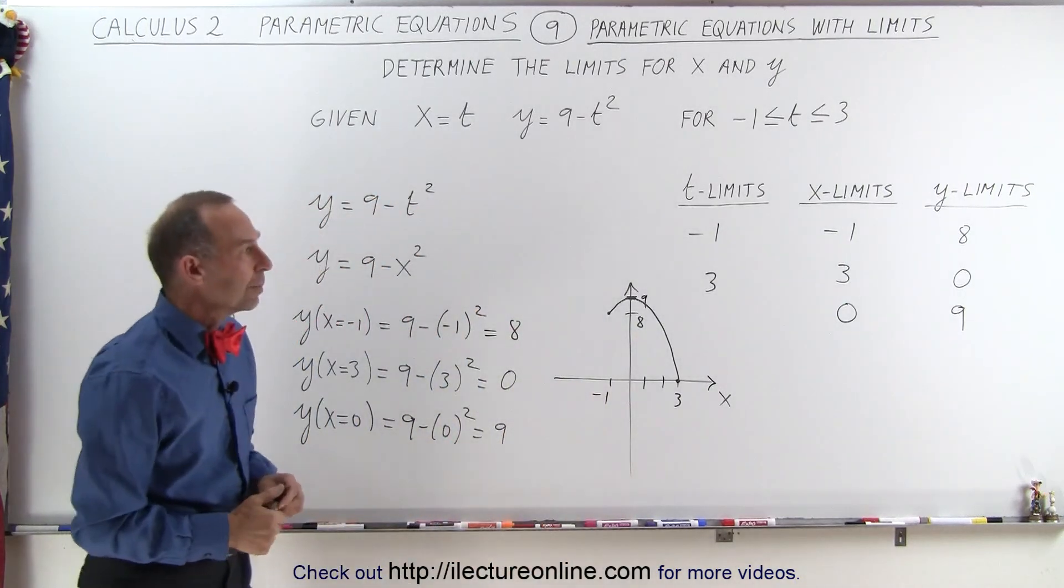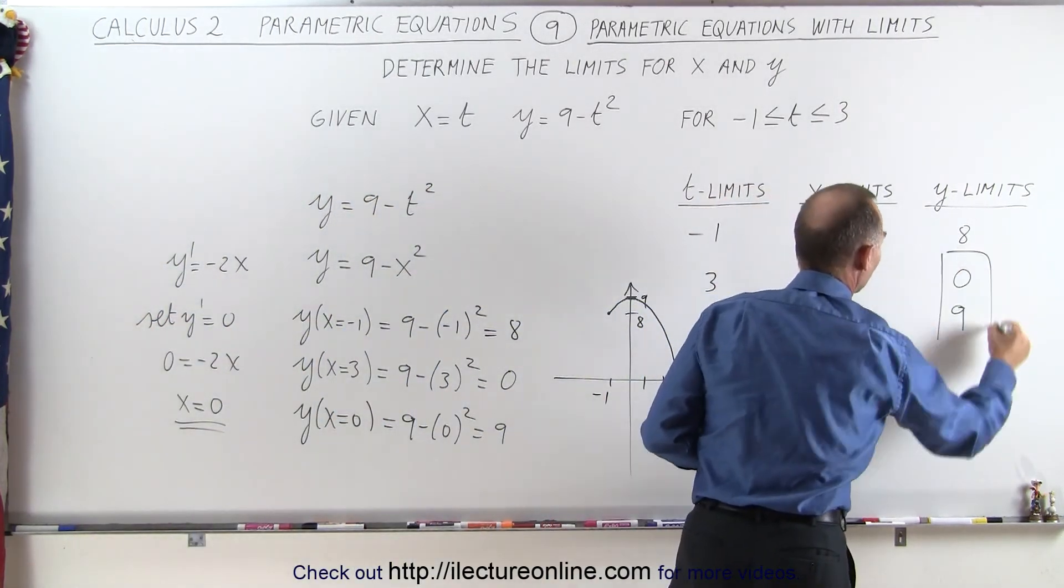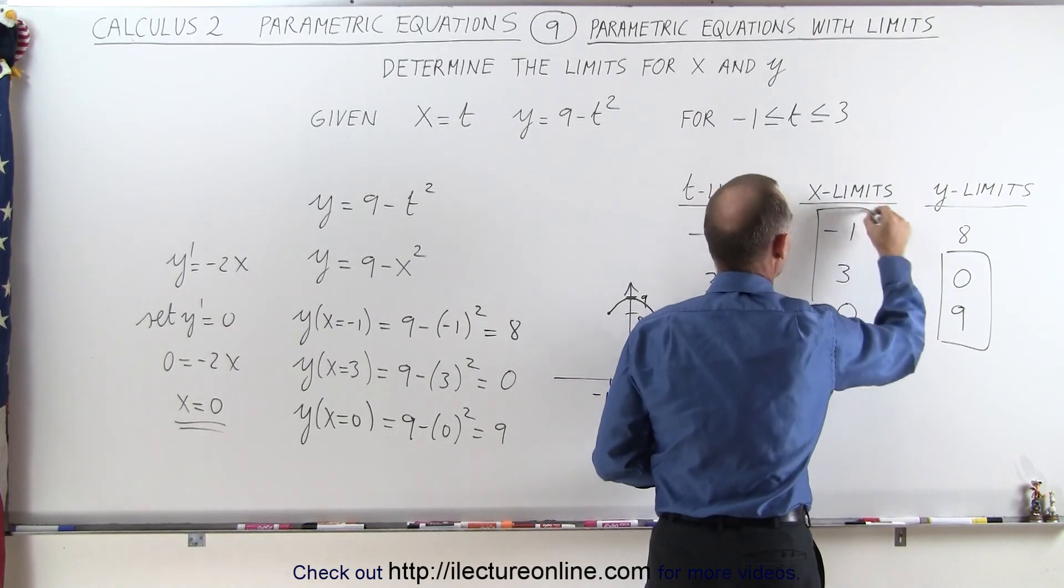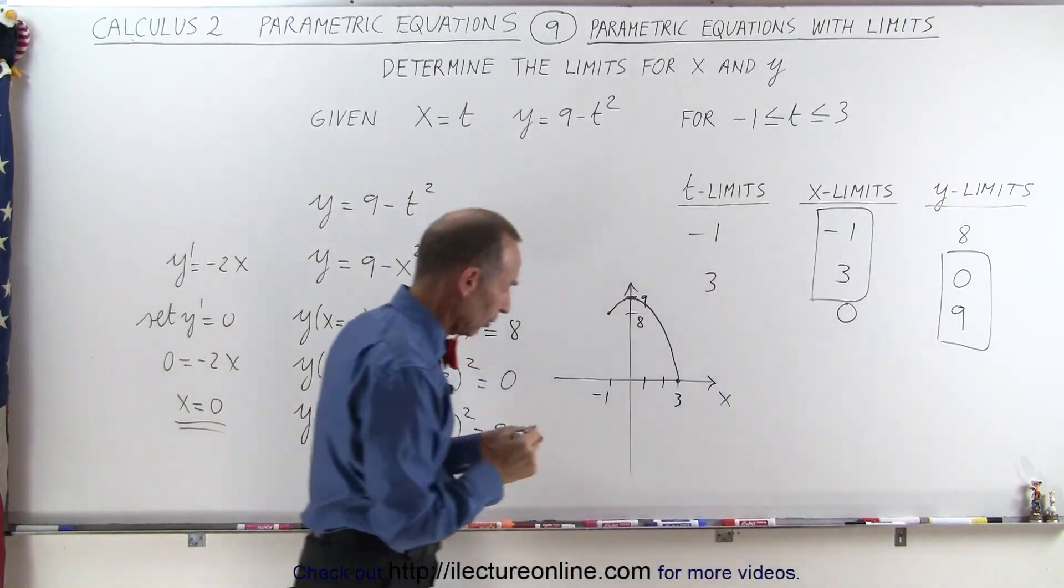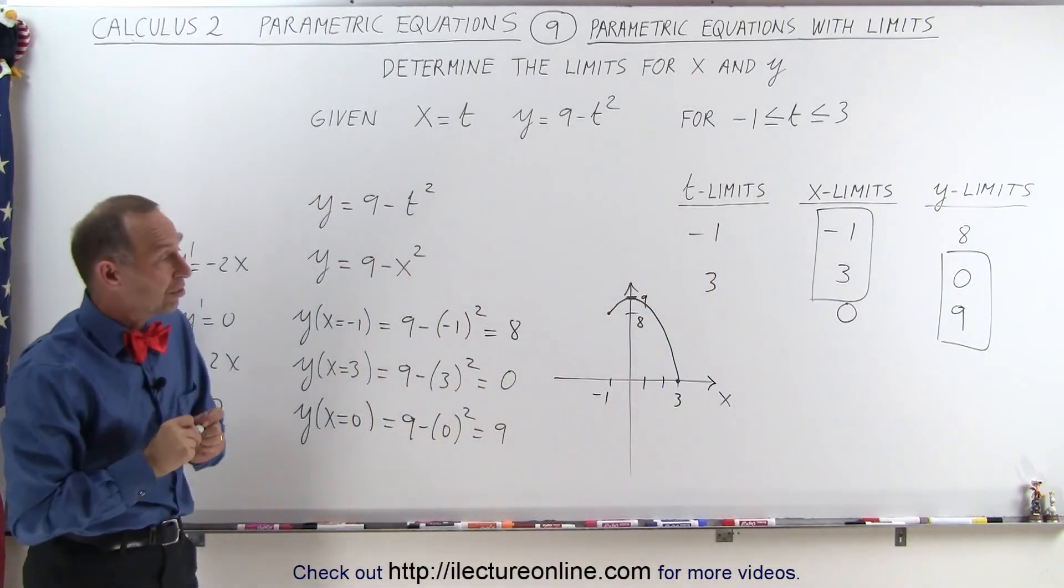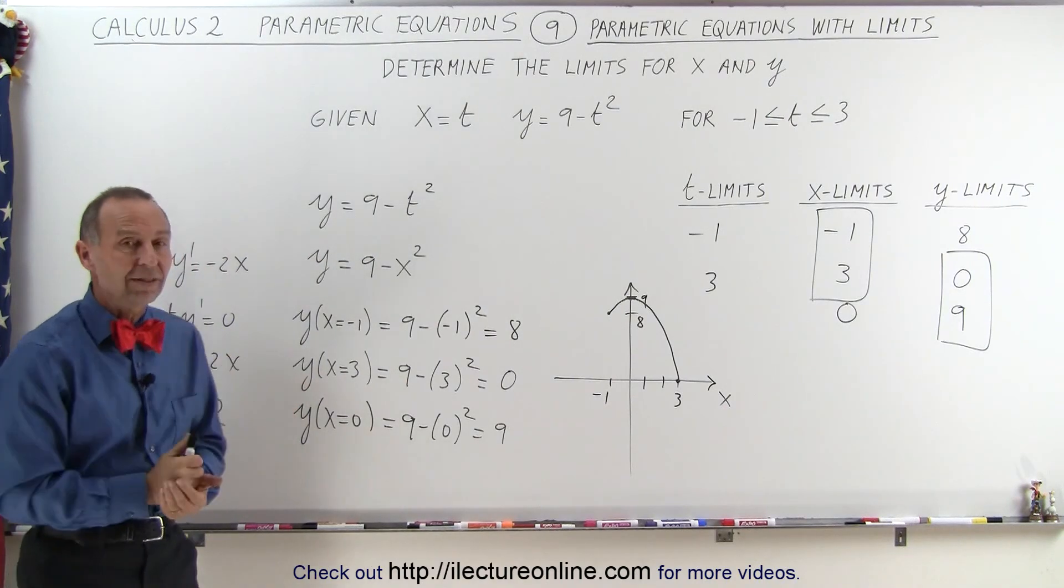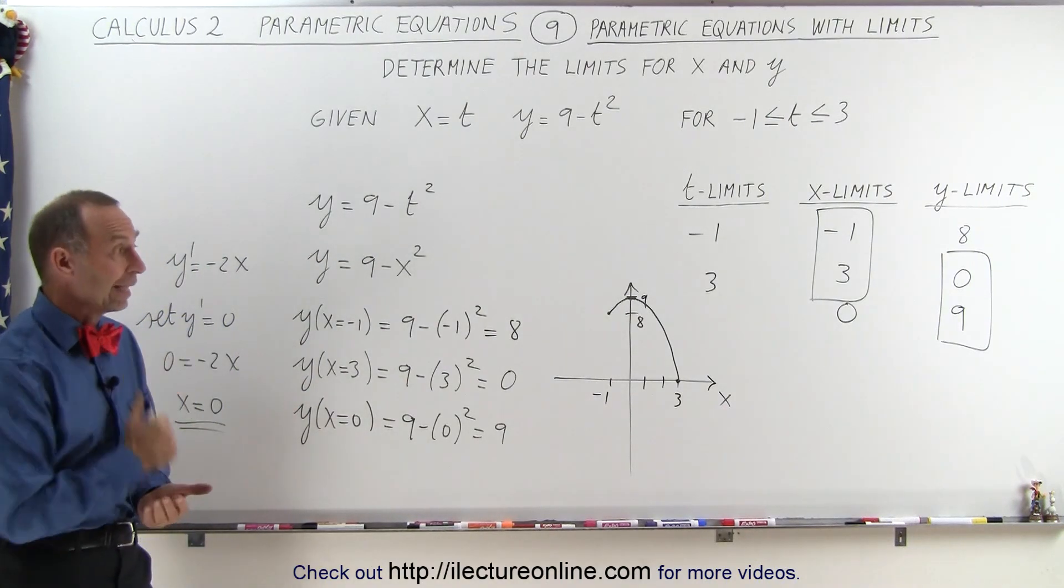The ultimate limit, the y limits, are between 0 and 9 for y, and between negative 1 and 3 for x. So we may need to do a little bit more investigation to make sure we don't miss a particular limit in y. And that's how it's done.